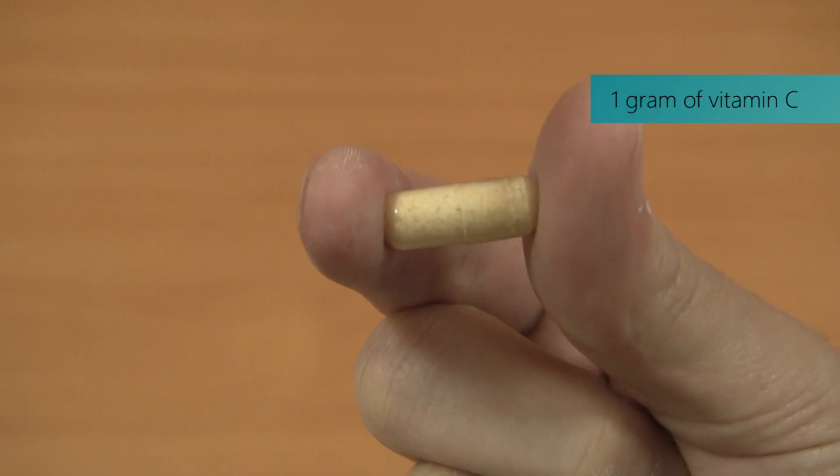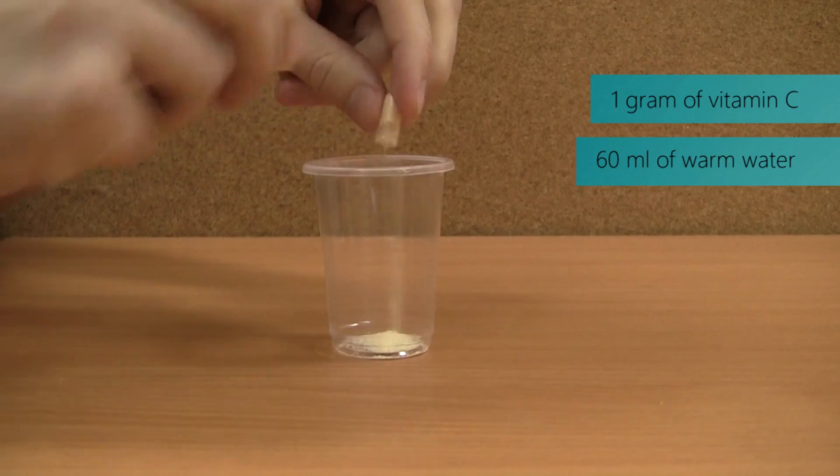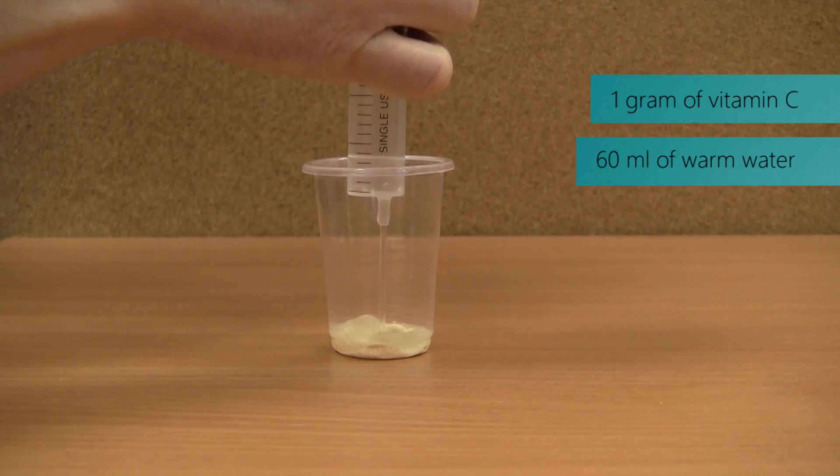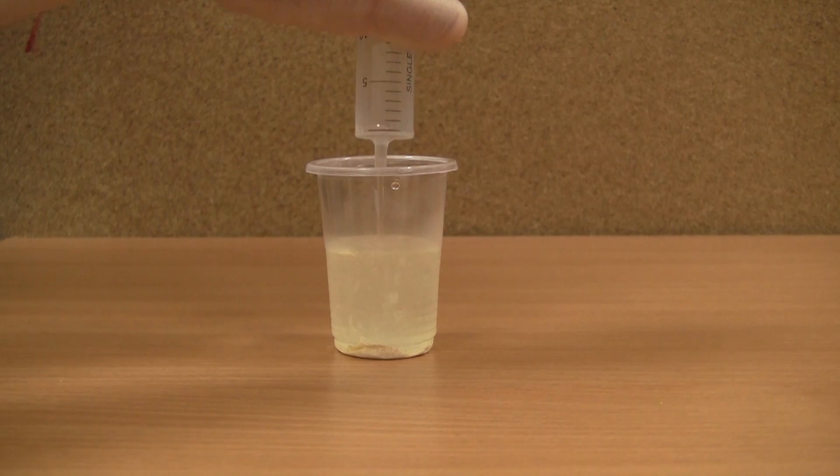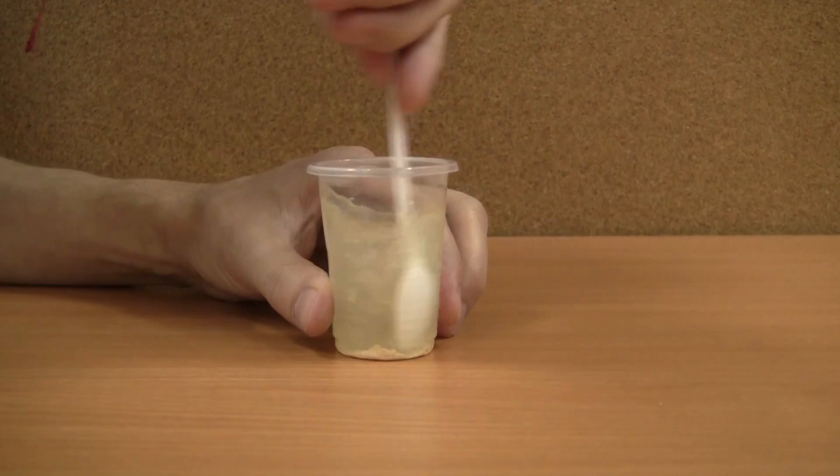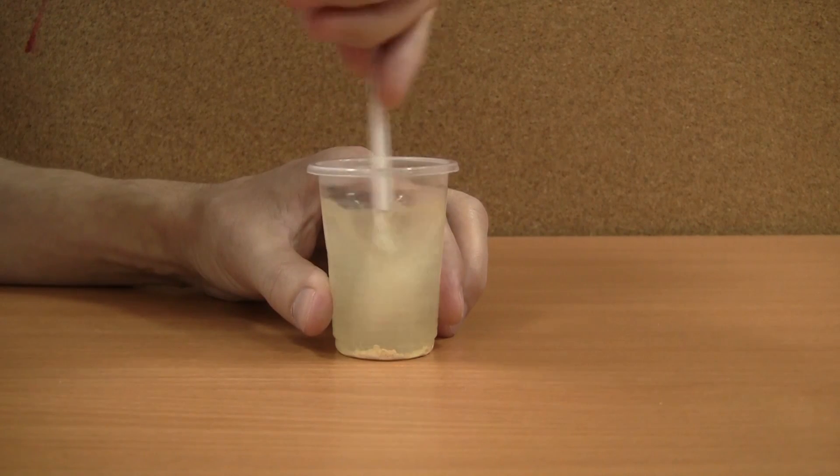Place 1 g of vitamin C in a plastic cup and add 60 ml of warm water. The syringe will help to accurately measure the required volume. Stir well to dissolve the powder completely.